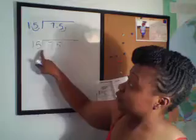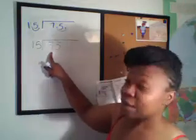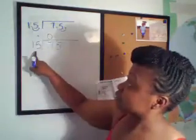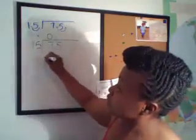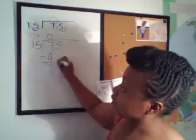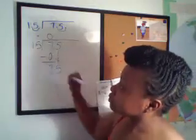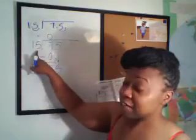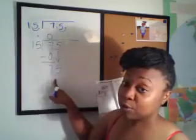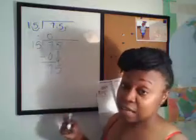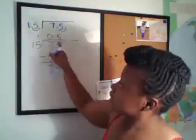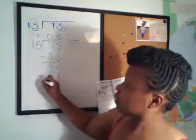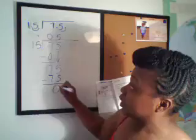What number times 15 will give me close to 7 without going over 7? Zero. Zero times 15 gives me 0. 7 minus 0 is 7. Bring down my 5. Then we say to ourselves: what number times 15 will give me close to 75 without going over? In this case it will be 5. So 5 times 15 gives me 75, and I have no remainder.